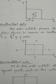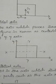Next is the central axis. The central axis is the axis which passes through the center of the section, where the X-axis and Y-axis meet — that is the center of gravity. So the axis which passes through where X-axis and Y-axis meet is called the central axis.